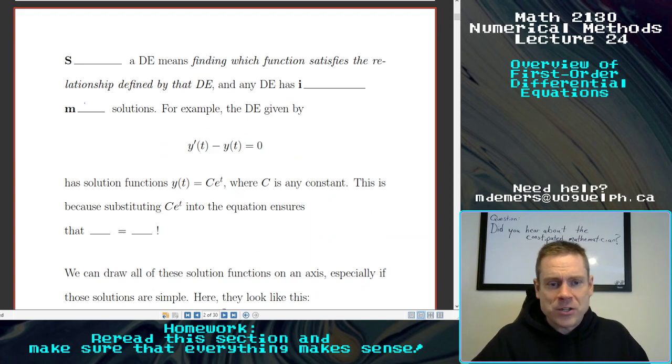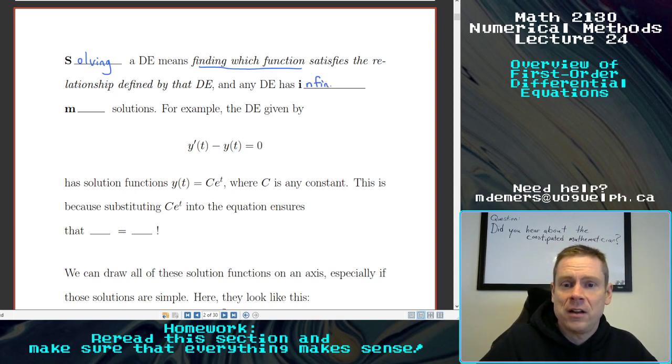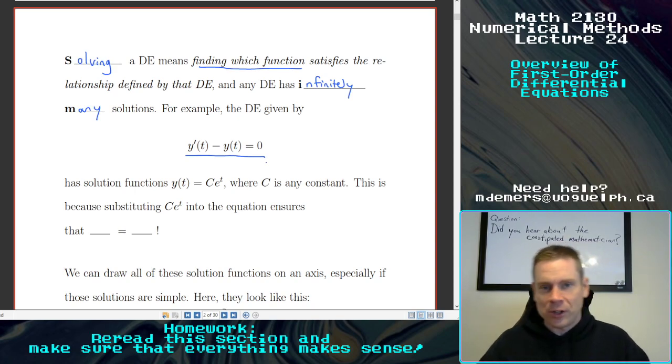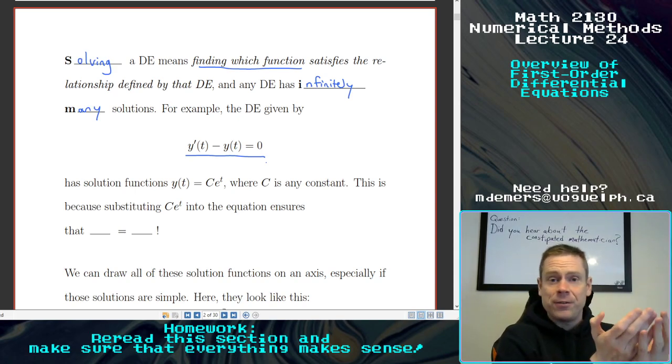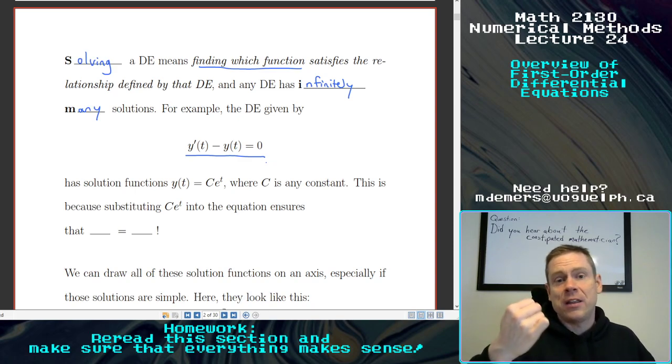And as I sort of mentioned before, solving a DE means finding which function satisfies the relationship defined by that DE. And any differential equation that we look at has an infinite number, so infinitely many solutions. So here's a really simple example, y prime minus y equals zero. That's saying, I want to figure out the functions y of t, so that when I take their derivative and I subtract the original function away from that derivative, I get the zero function.